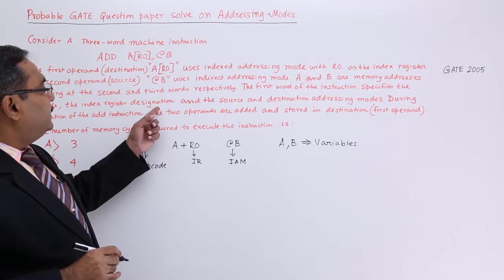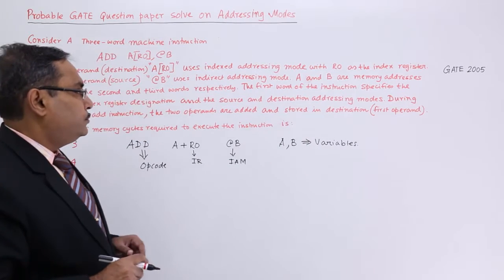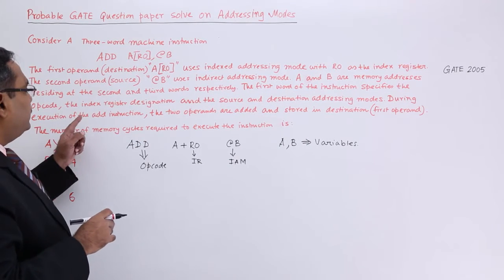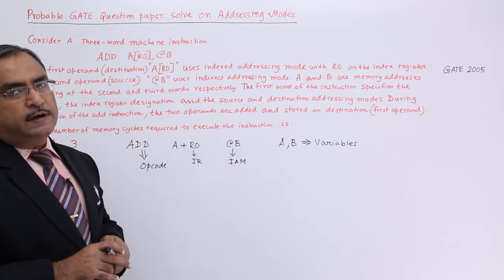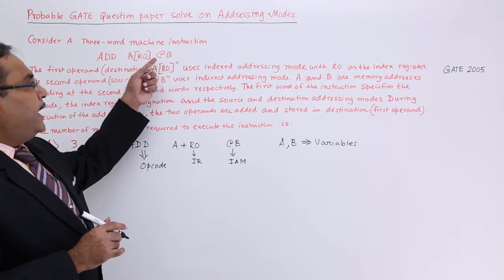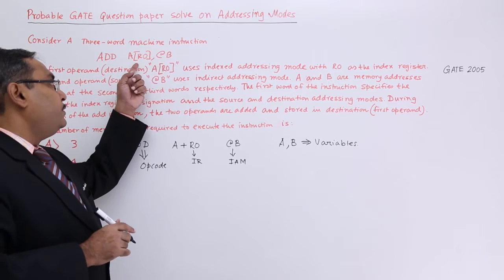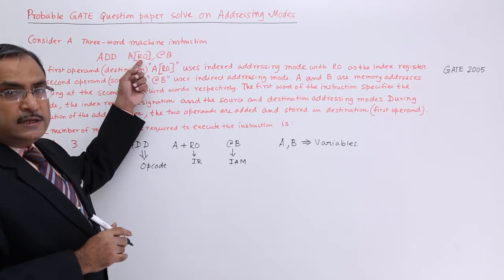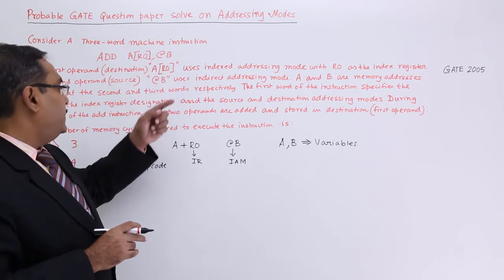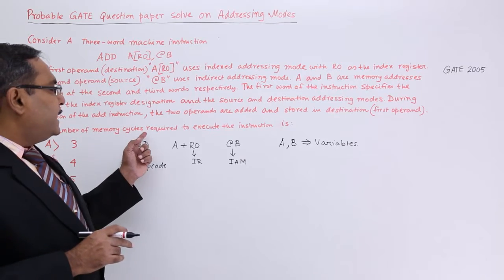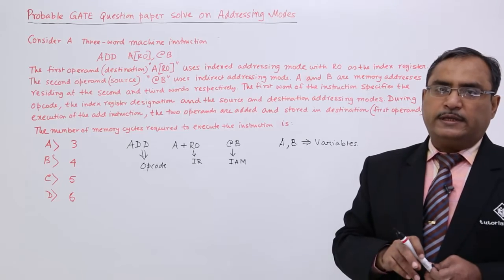The first word also specifies the indexed register designation and the source and destination addressing modes. During execution of the ADD instruction, the two operands are added and stored in the destination — the first operand. So operand 1 is both source and destination, while operand 2 is only the source. The question asks: calculate the number of memory cycles required to execute the instruction.